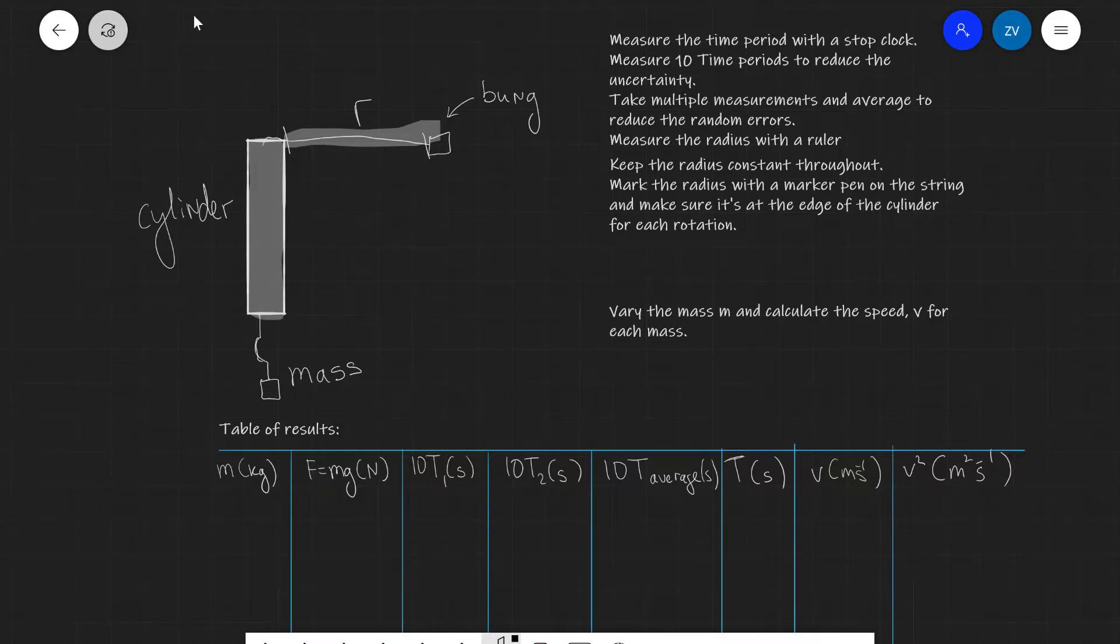We're going to be measuring the radius r with a ruler of course. So in the exam it's very important to mention what instrument we're going to be using and we're going to be measuring the time period with a stop clock.